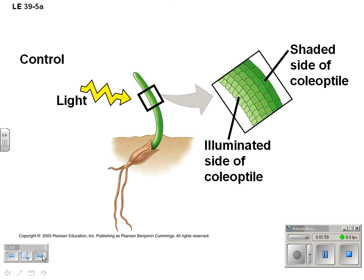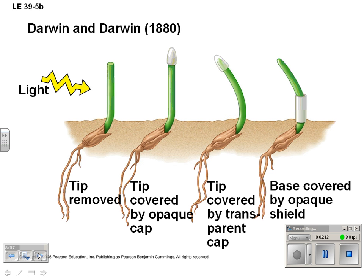If we plant corn in the ground and illuminate only one side, it curves towards the light. Darwin and Darwin in 1880 did an experiment where they cut the tip off a plant, covered another with an opaque cap that light couldn't get through, covered one tip with a transparent cap, and covered the bottom of the plant with an opaque shield. The conclusion from this experiment — what is causing the curvature?